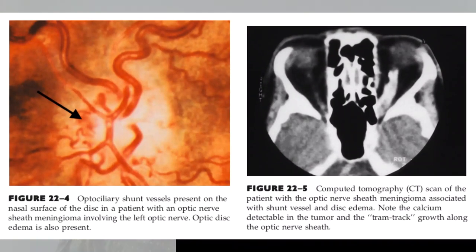Optociliary shunts are a very important feature in optic nerve sheath meningiomas. In the picture, optociliary shunt vessels are clearly visible on the nasal surface of the disc. On neuroimaging, the CT shows the typical tram track sign — in fact CT picks up calcification better than MRI. You can see the optic nerve itself is fine, but there is a very dense hyperintense lesion on the optic nerve sheath.